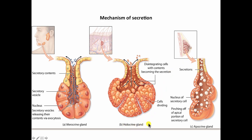And then holocrine glands, such as sebaceous glands, secrete the whole cell. What happens is young cells are continually formed at the base of the gland. As these cells are pushed up towards the lumen by even younger cells, they become filled up with a secretory product. In the case of sebaceous glands, that's sebum, and eventually they burst and the product gets pushed into the lumen through the duct. The duct in the case of sebaceous glands fuses with a hair follicle and finds its way onto the scalp.